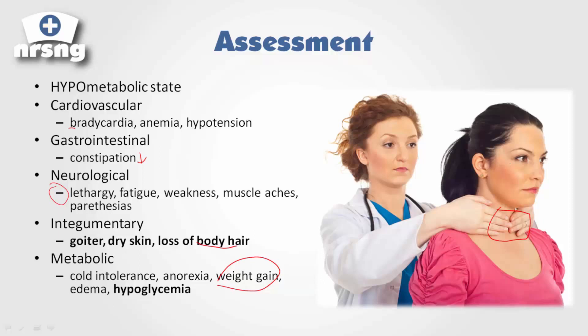I really just want to make sure you make that connection — the thyroid gland is going to lead to metabolic processes. With hypothyroidism, we're going to have a decrease in metabolic state, and that can lead to coma. An ultra-decline in our cognition, our metabolic state, and everything can lead to the coma.